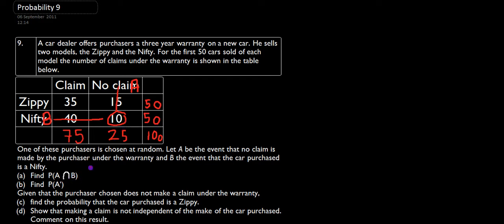And we want to find the probability of that happening where it's out of 100 altogether. So therefore, the probability that A intersect B is going to be 10 out of 100, which equals 0.1.